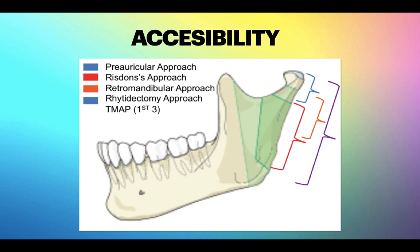The approach to the TMJ depends on the area that needs to be accessed, avoiding the nerves and vessels in between, whether an interpositional graft needs to be taken, and whether the joint needs to be reconstructed. The pre-auricular approach provides access from the condylar head to the neck. The Residence approach provides accessibility from the sub-condylar region to the angle of the mandible. The Heinz approach provides access from the neck of the condyle to the mid ramus. The ritidectomy approach provides access from the condyle to the angle of the mandible.